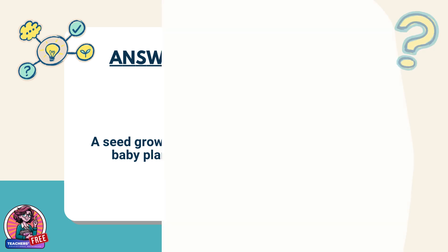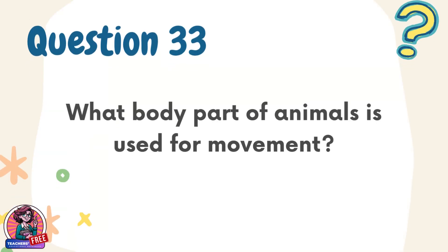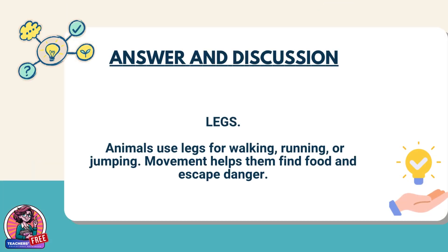Question 33. What body part of animals is used for movement? Answer: Legs. Animals use legs for walking, running, or jumping. Movement helps them find food and escape danger.